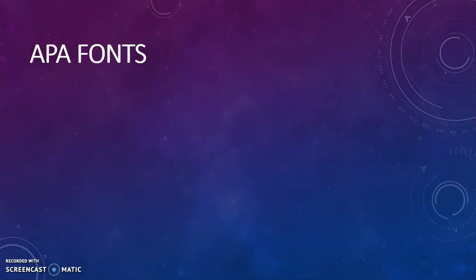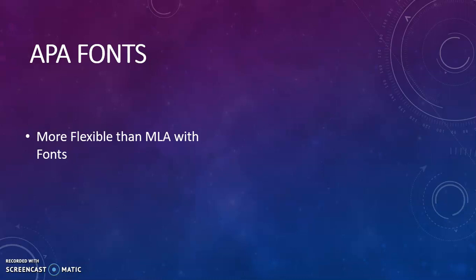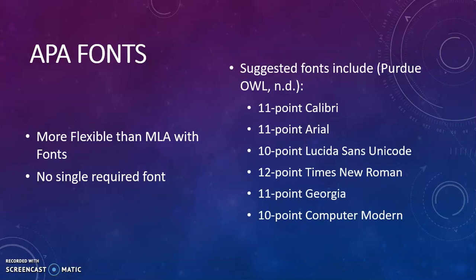All right, before we dive into the four parts of an APA essay, I want to make a quick note about APA fonts — they're not so strict like MLA is. You may be familiar with MLA's focus on 12-point Times New Roman black font as really the only acceptable font. Well, for APA there's no single required font like that. Instead, there's a whole list of suggested fonts — feel free to pause the video here and check out this list. These are suggestions, so be sure to check in with your professor or instructor to see if they have specific preferences, because they might.